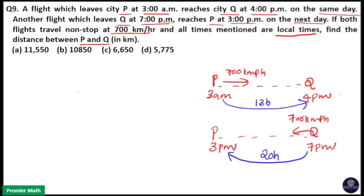You can see speed is constant, but time is varying. Time duration is varying here because this is in local time. The times given are in local time. This is city P and this is city Q. So, whenever you have local time questions, just take the average to get the correct time duration. Get the average of the time duration.